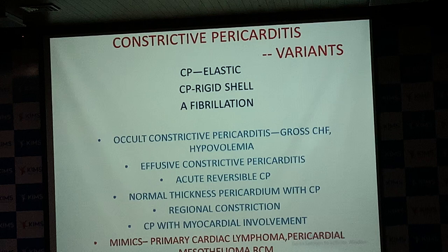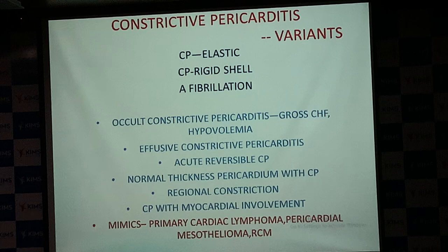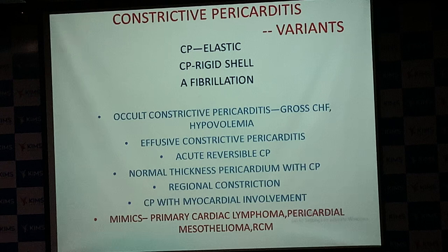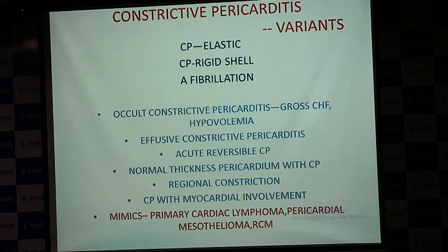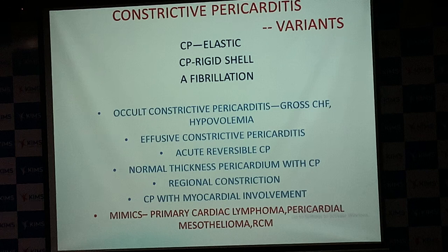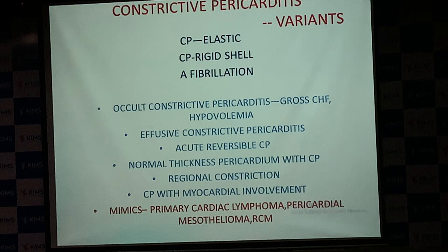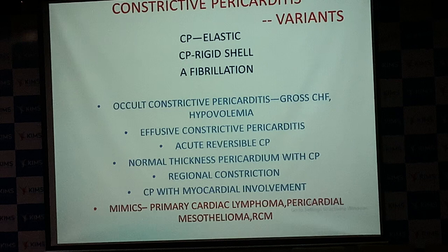Giving indomethacin or corticosteroids can normalize the constrictive physiology in less than a month. We have a series of patients where MRI demonstrated reversal of constriction with purely medical therapy — no surgery. Some patients sent for surgery by others showed acute reversible constrictive pericarditis on MRI or PET; steroids reversed the constriction completely.